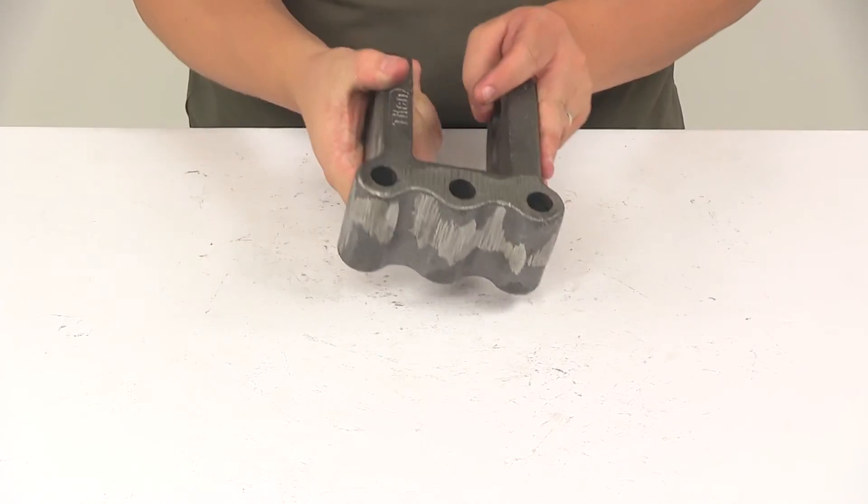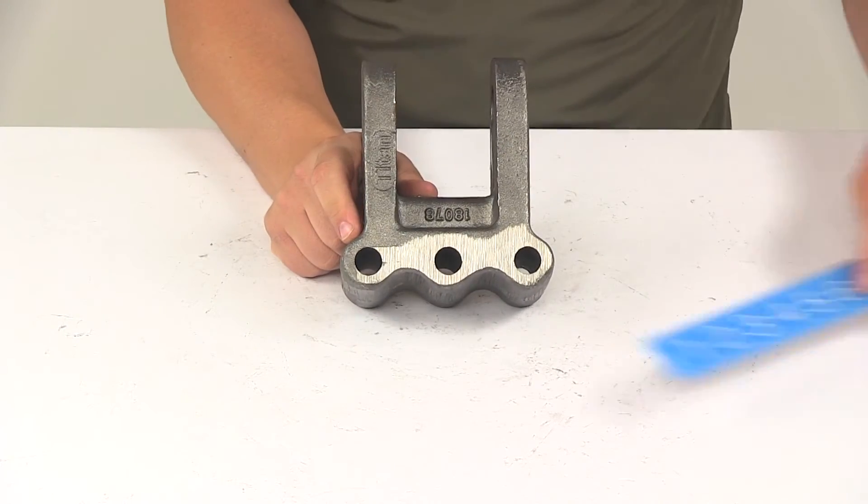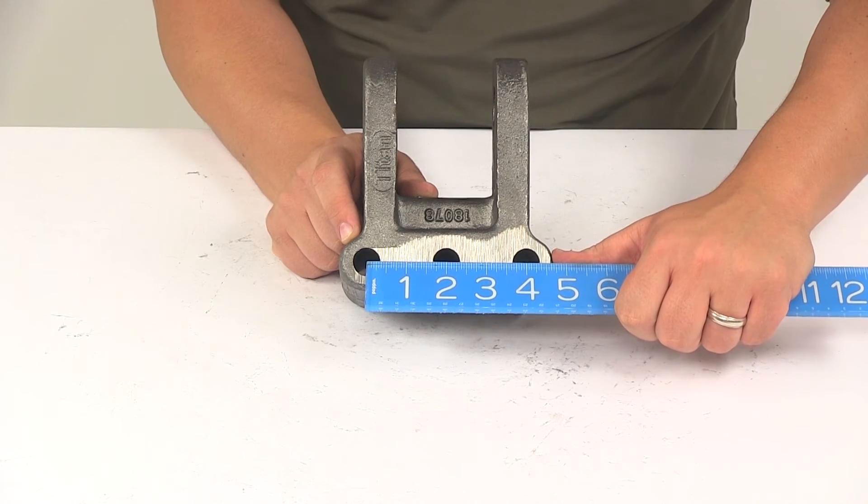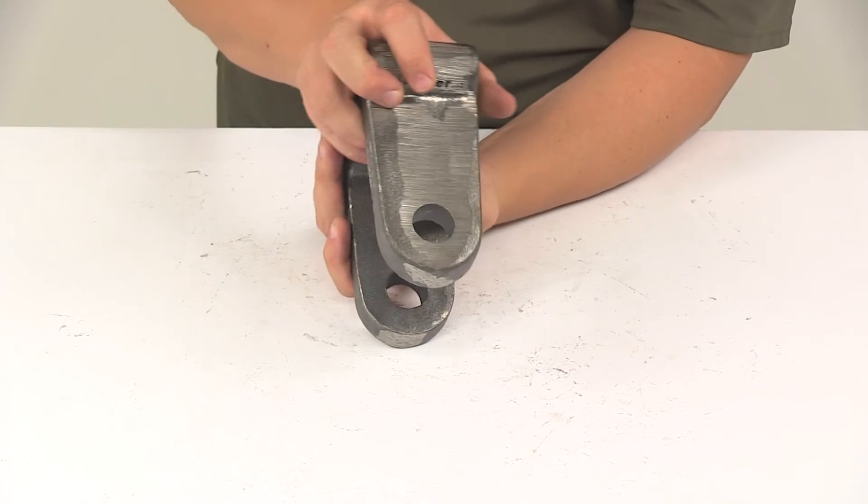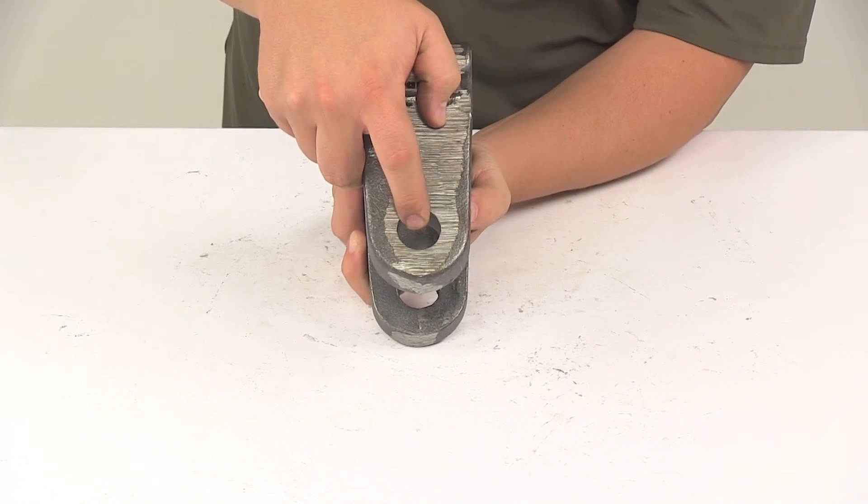The mount holes on the unit are separated on center by two inches apart. The clevis pinhole diameter, that's this hole right here, is going to give us a diameter of one inch.